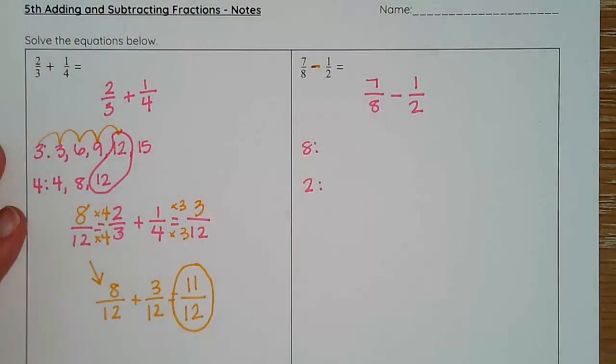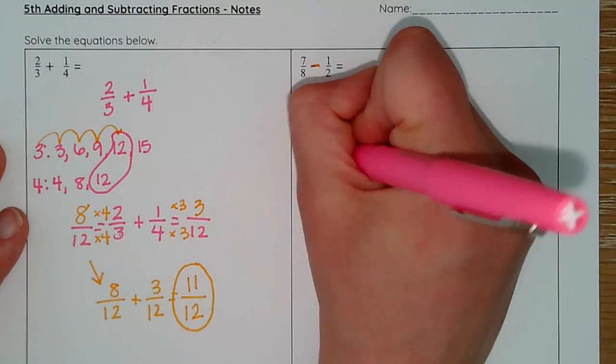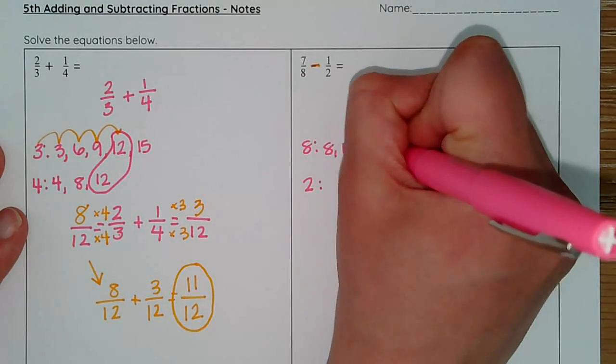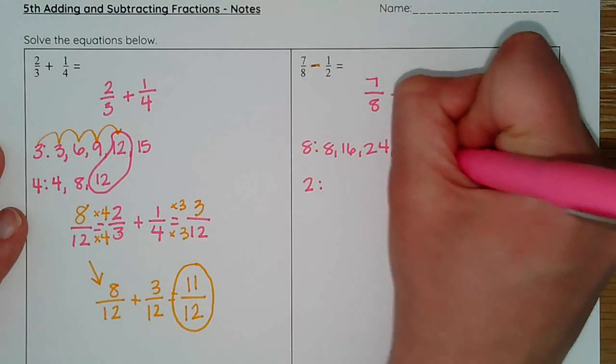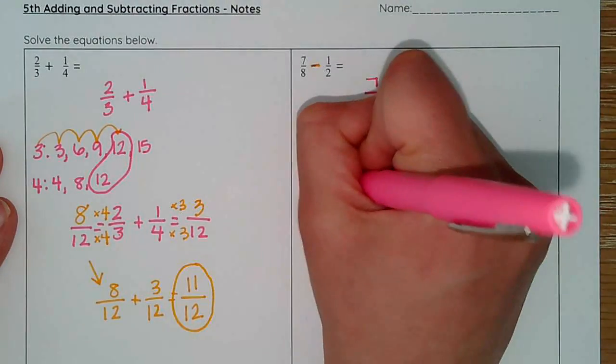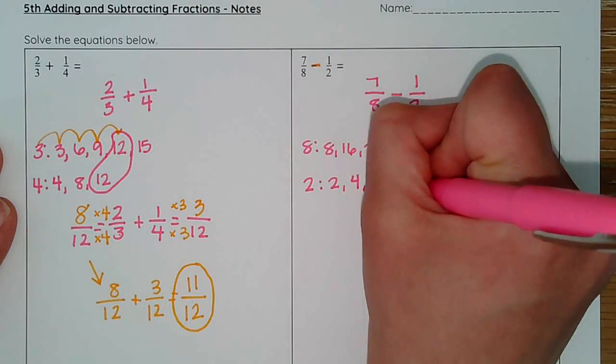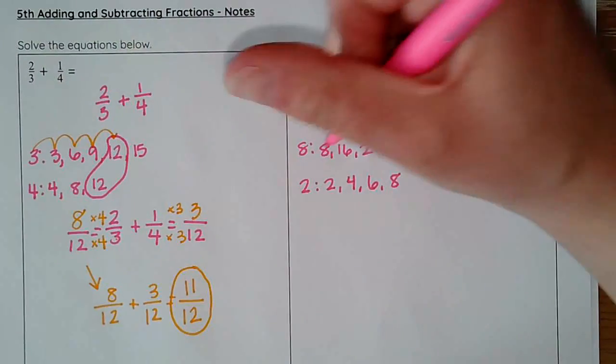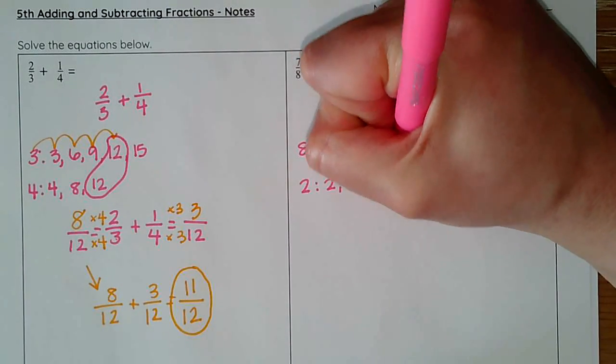So I've got my eight here and my two. I make a list of multiples: eight, sixteen, twenty-four, thirty-two, and forty. Down here, I go two, four, six, eight. So eight and eight match.